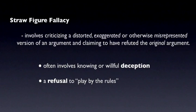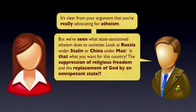Let's look at an example. Jennifer has just finished giving her argument against mandatory prayer in public schools. Let's assume that her argument focused on separation of church and state, the First Amendment, and the importance of respecting religious diversity in a multicultural society. Now Bob responds like this: 'It's clear from your argument that you're really advocating for atheism. We've seen what state-sanctioned atheism does to societies — look at Russia under Stalin or China under Mao. Is that what you want for this country? The suppression of religious freedom and the replacement of God by an omnipotent state?' It's clear that Bob isn't responding to Jennifer's original argument — he's responding to a distorted misrepresentation of it, a straw figure.